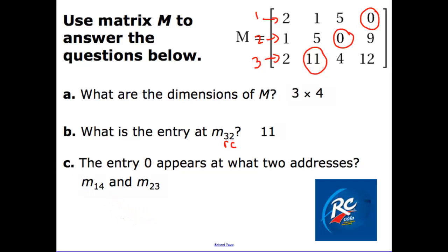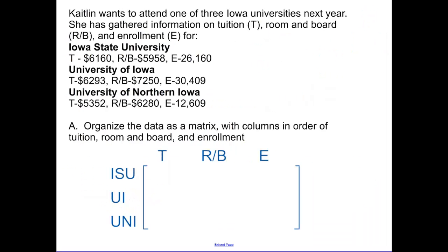We want to organize this data into a matrix. And yes, I want you guys to write this down. As always, we write down every example. So we have Iowa State University, that's ISU, University of Iowa, and University of Northern Iowa. And there are certain things, her tuition, her room and board, and her enrollment. The enrollment for the school is $26,160.